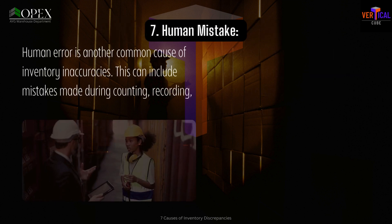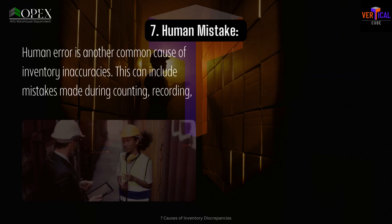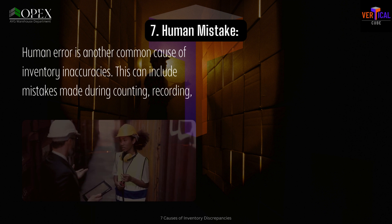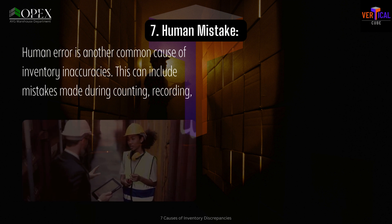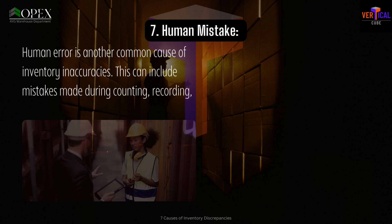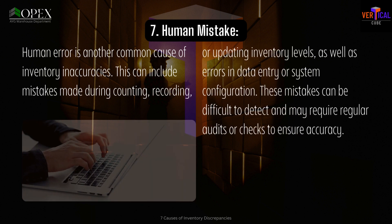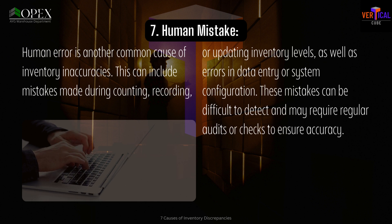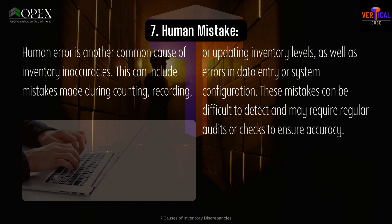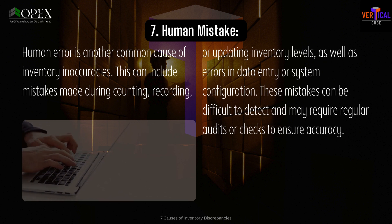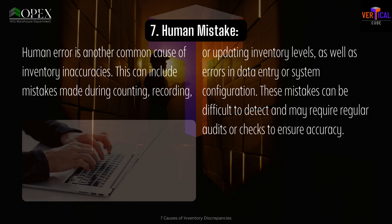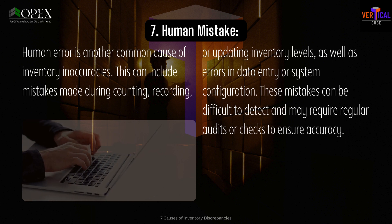7. Human mistake. Human error is another common cause of inventory inaccuracies. This can include mistakes made during counting, recording, or updating inventory levels, as well as errors in data entry or system configuration. These mistakes can be difficult to detect and may require regular audits or checks to ensure accuracy.